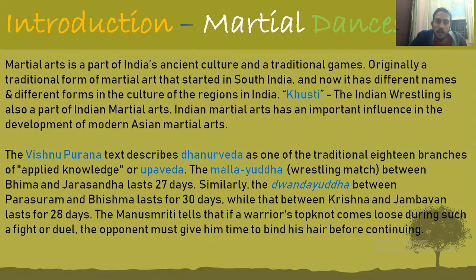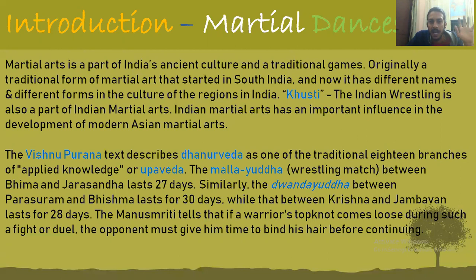There was also a Dwandiyuddha between Parashuram and Bhishma, which lasted 30 days. Bhishma is the most respected person of the Kuru dynasty, the son of Shantanu, considered the head and icon of the Kuru clan. Manusmriti also talks about rules of different forms of martial dances — for example, if a warrior's top knot (pony) gets opened during a fight, he should be given time to tie it back.